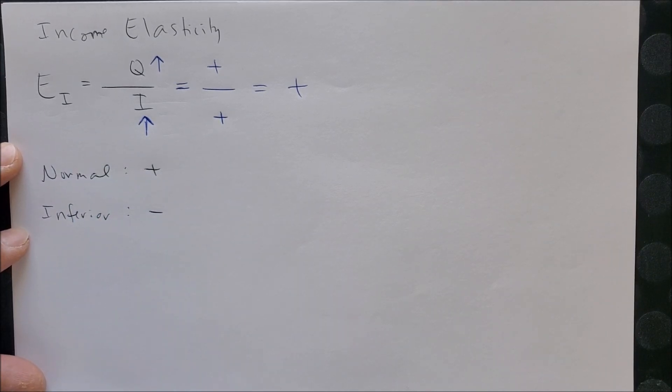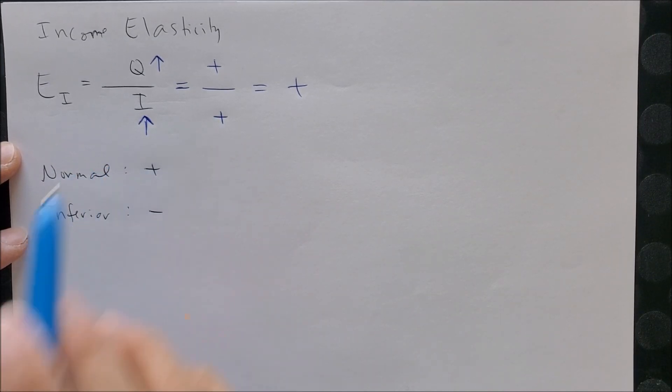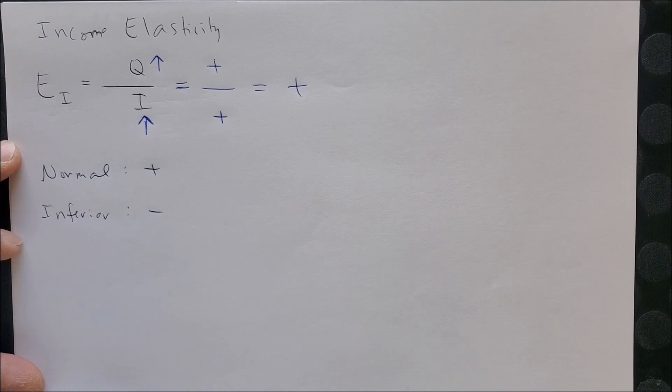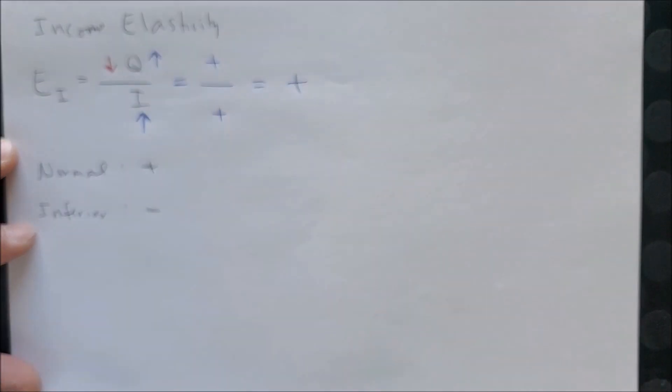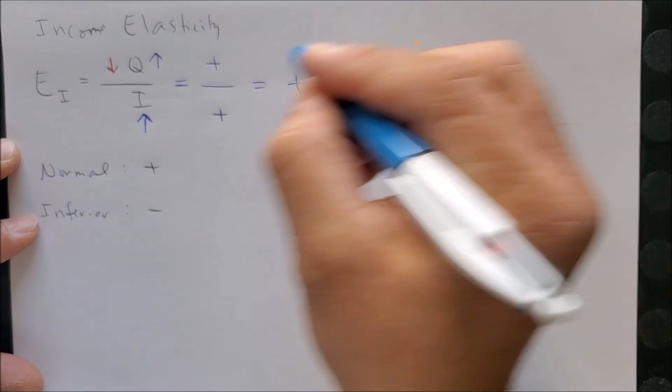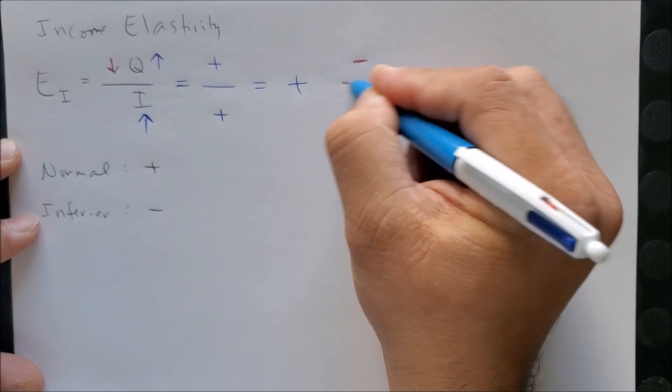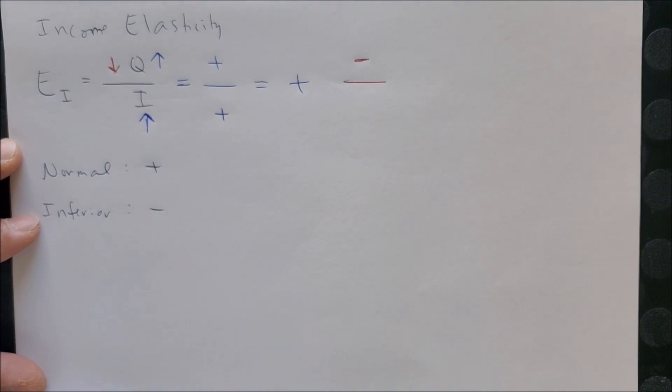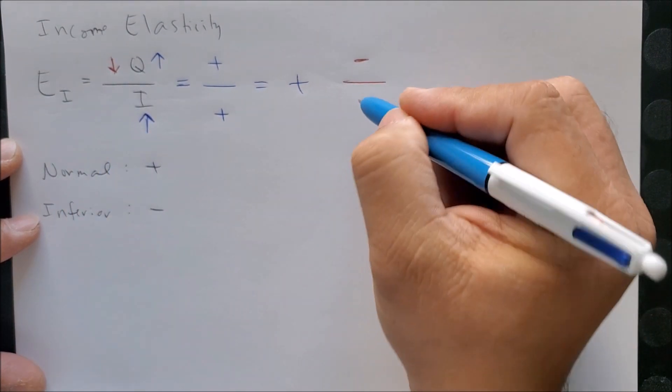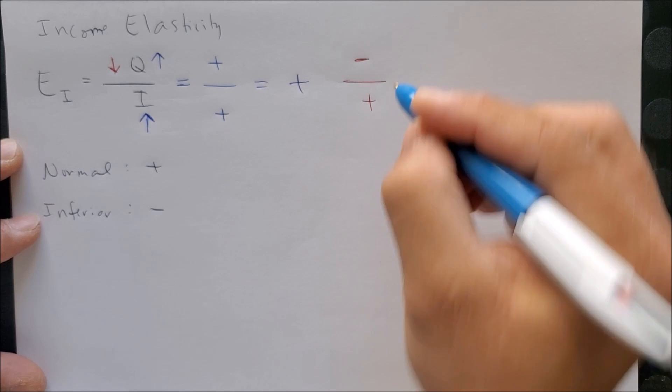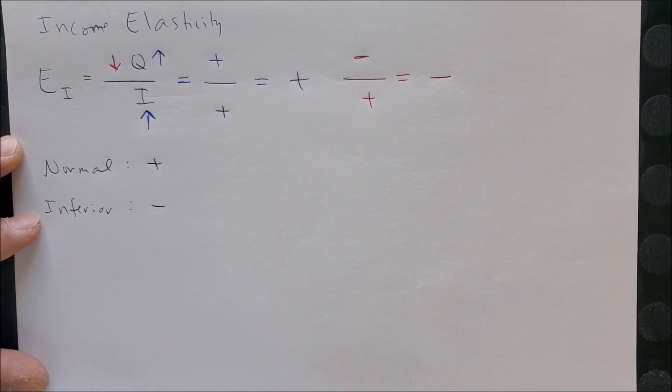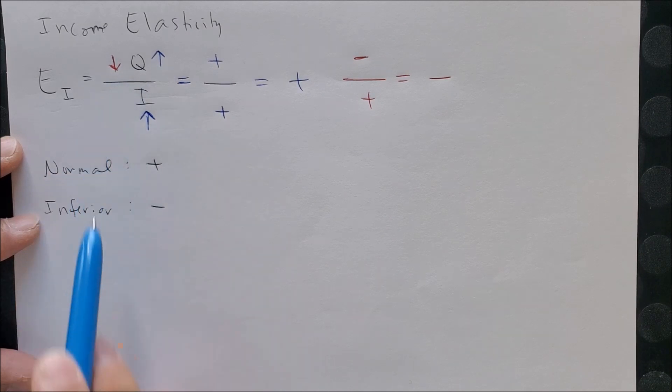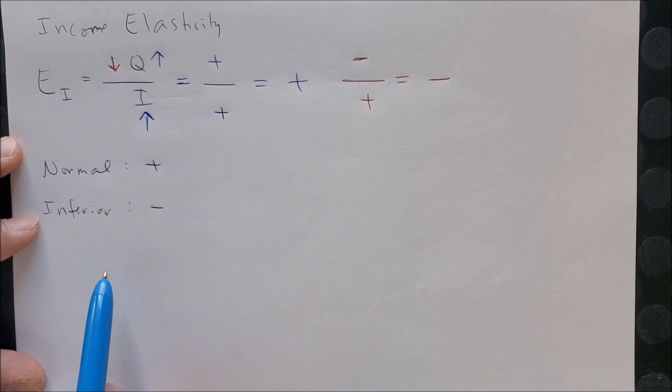At the same time, if your income increases but now you consume less, we can now focus on the negative value over the positive value, which gives us a negative value. And this would then say that the good is an inferior good with respect to your income.